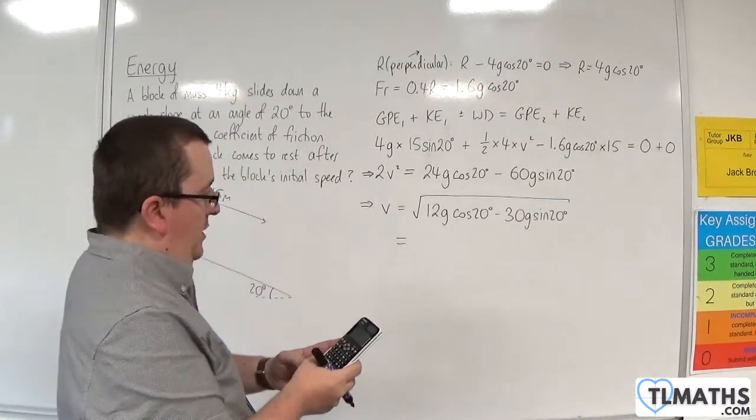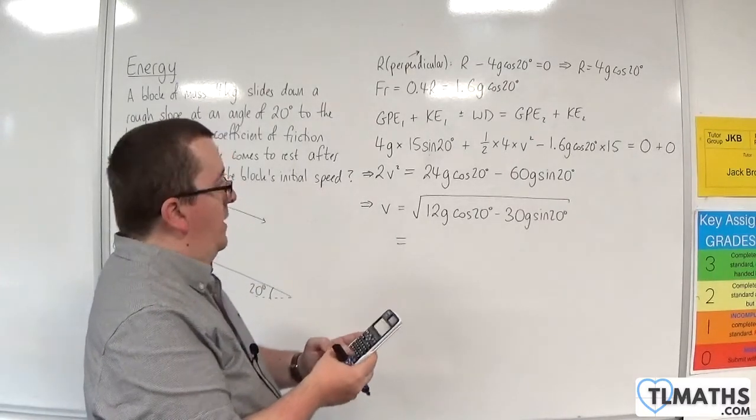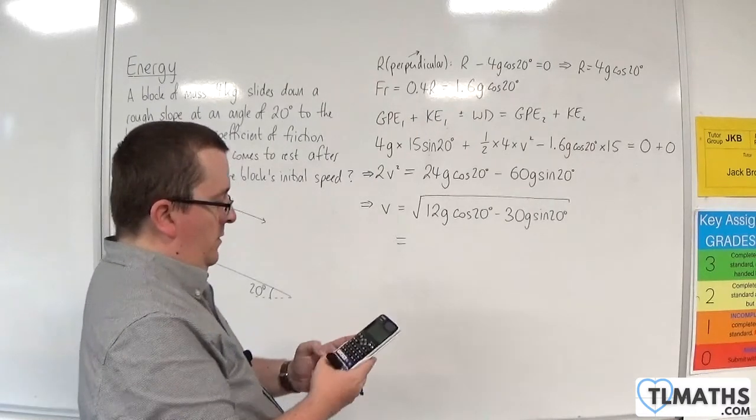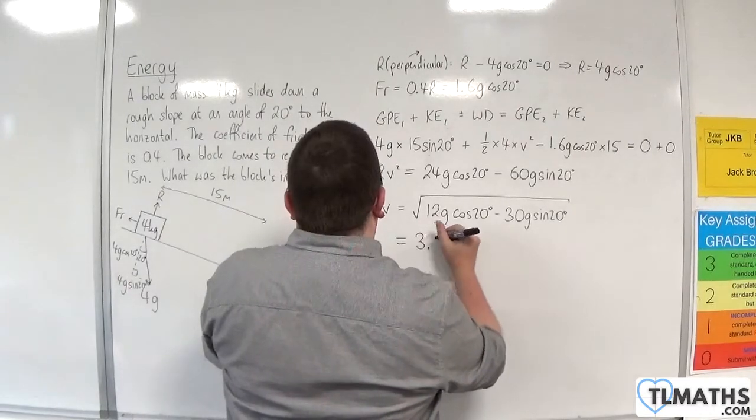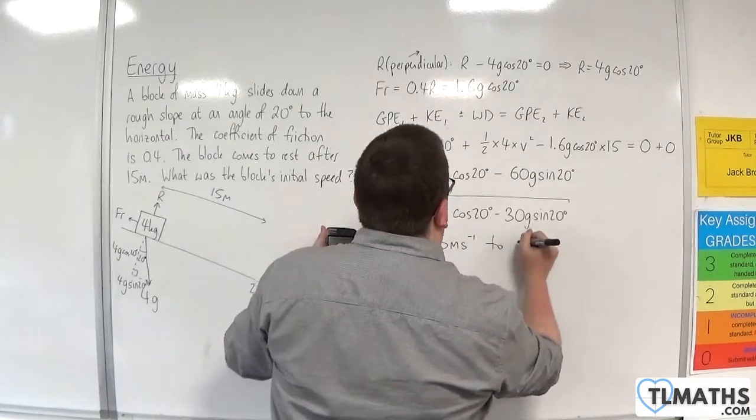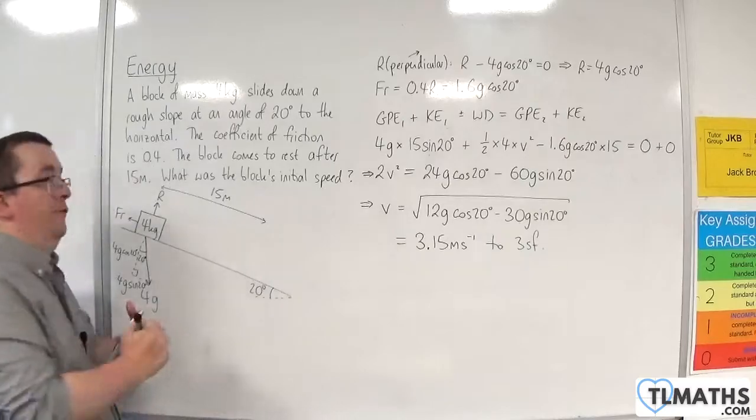So what's that? 12 times, I'm going to put in G as 9.8 now, times cos 20, take away 30 times 9.8 times sin of 20. And we get an initial speed of 3.15 meters per second to 3 significant figures.